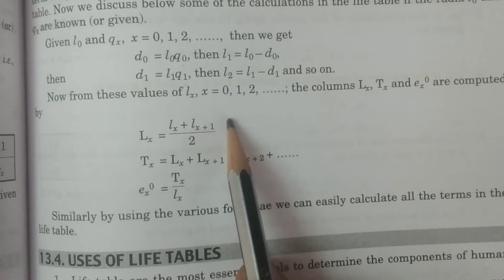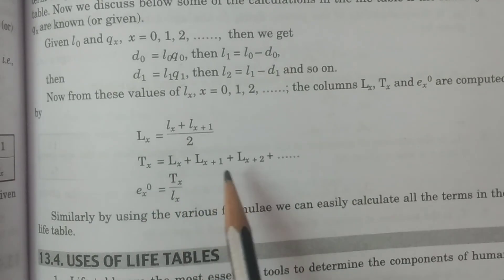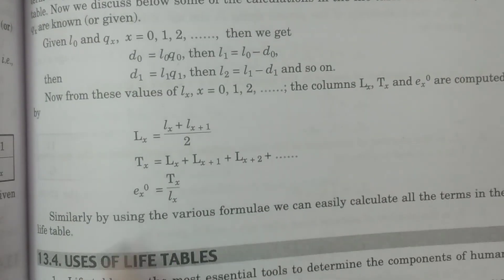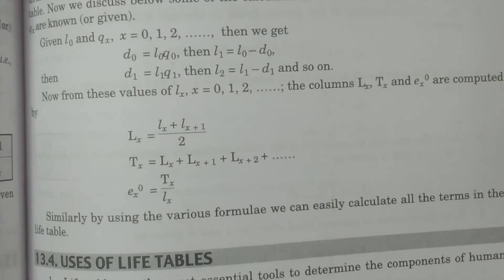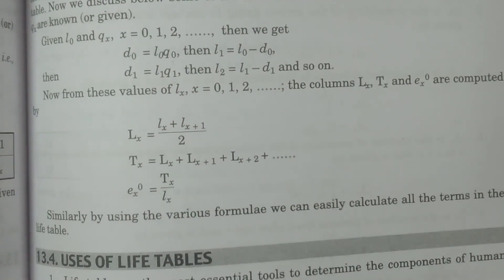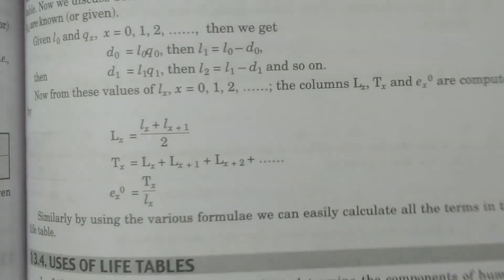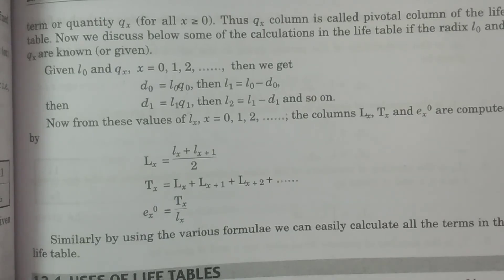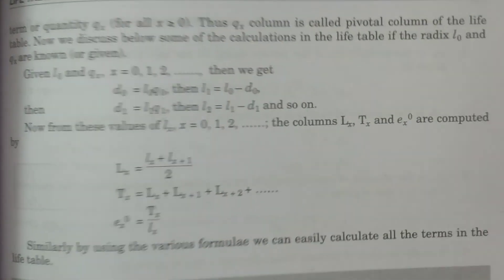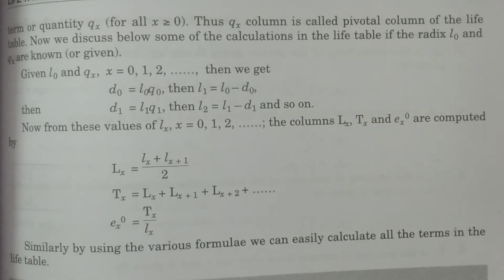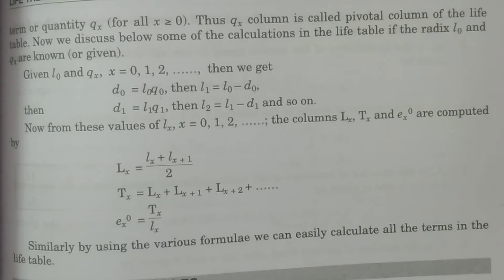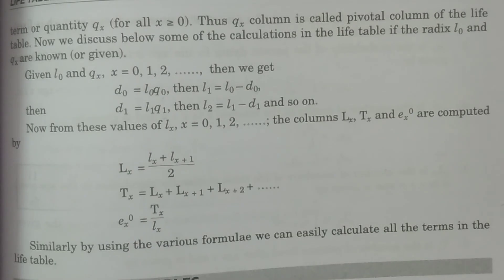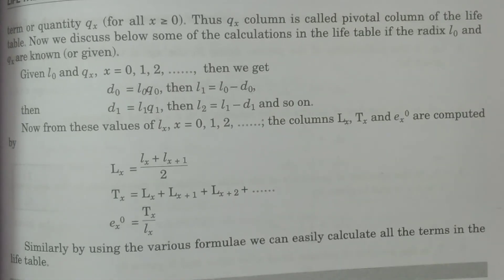Capital Lx = (lx + lx+1) / 2, Tx = capital Lx + capital Lx+1 + capital Lx+2 and so on, and ex-naught = Tx / lx. All formulas can be easily calculated once lx and qx are known — these two components are sufficient to construct the entire life table. This entire topic covers the three concepts in construction of a life table: assumptions, description, and construction. Thank you.